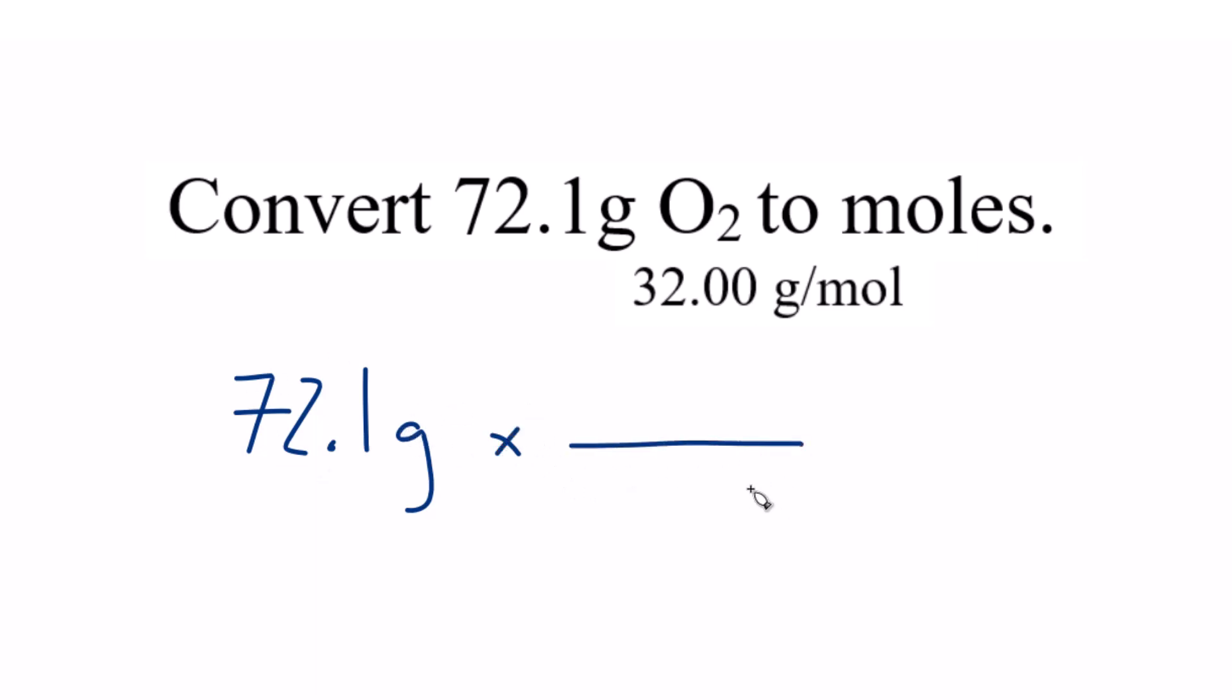We have grams on the top. We want to get grams on the bottom so they cancel out, and we want to end up with moles. So that needs to be on the top there. So 32.00 grams in one mole, and that's one mole of O2. We multiply the top and divide by the bottom. Grams are on the top and bottom, just like before, they're gone, and we end up with moles of oxygen.